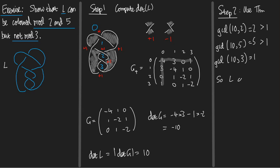So, consequently, L can be coloured mod 2, 5, but not 3. There we go. So that's the end of the exercise and the end of the lecture.